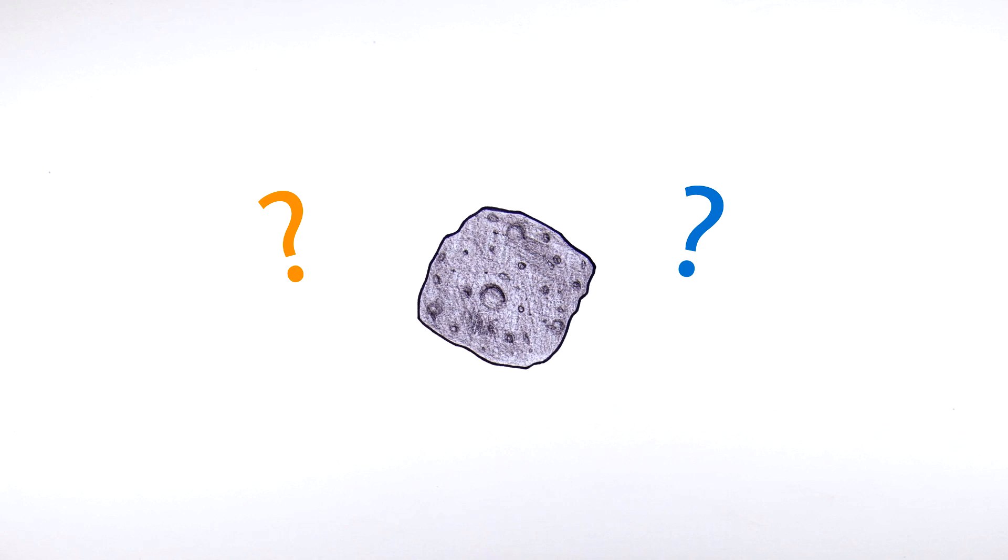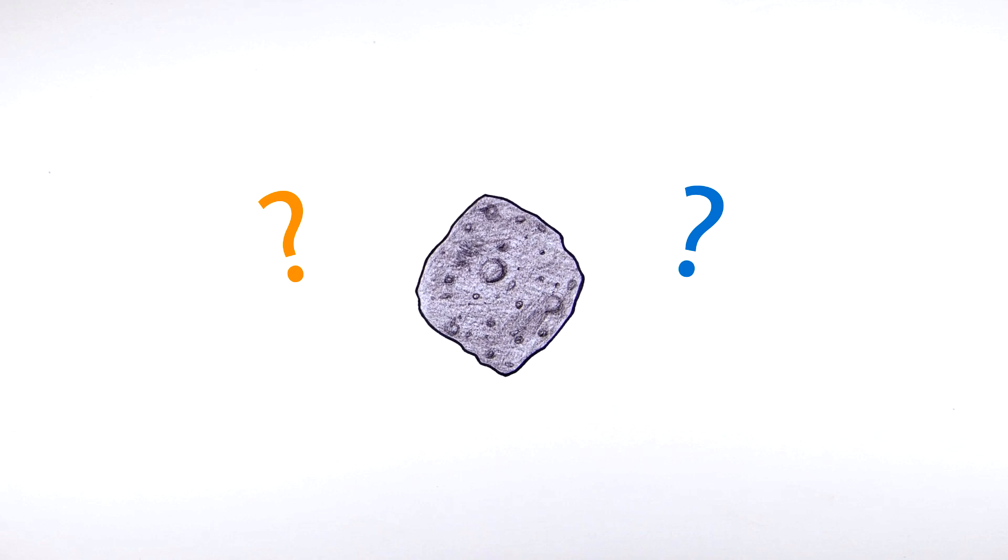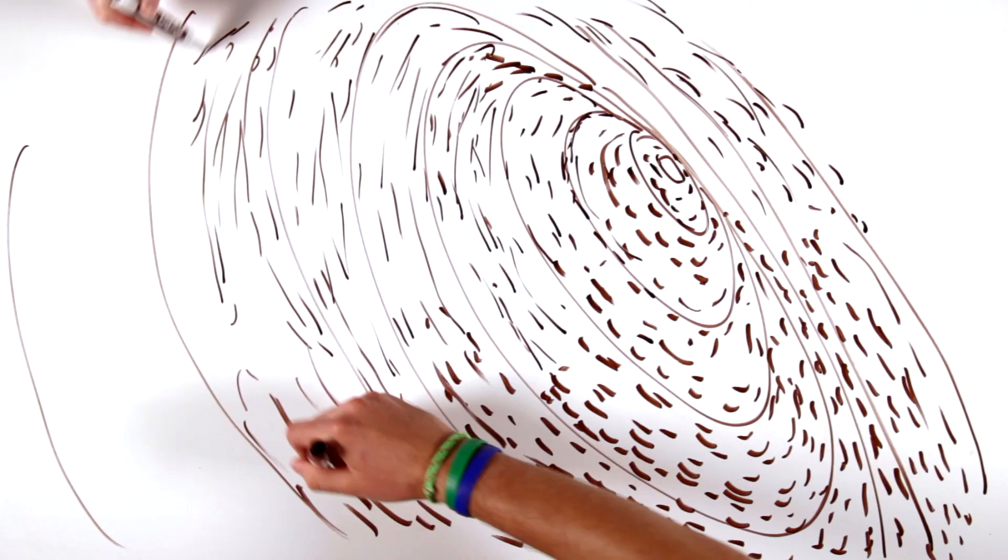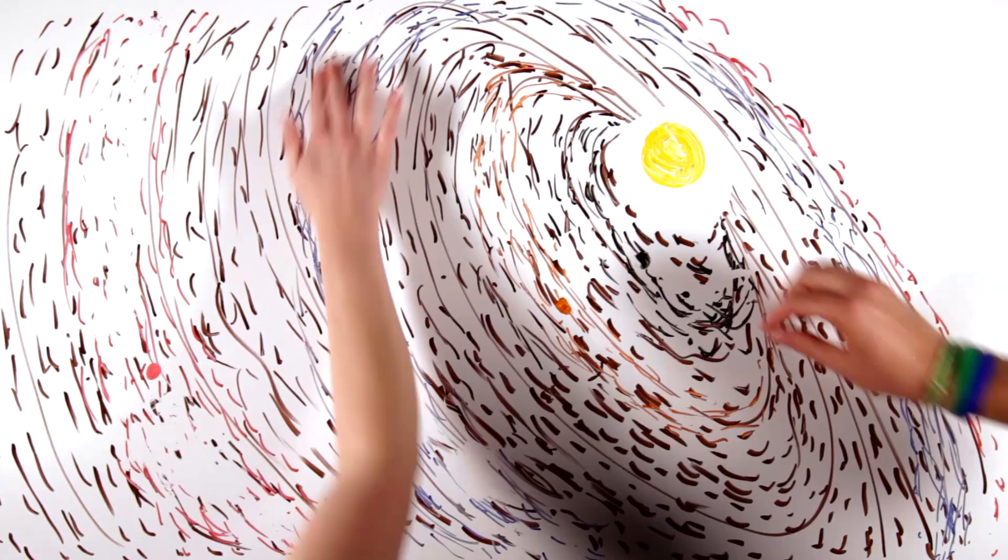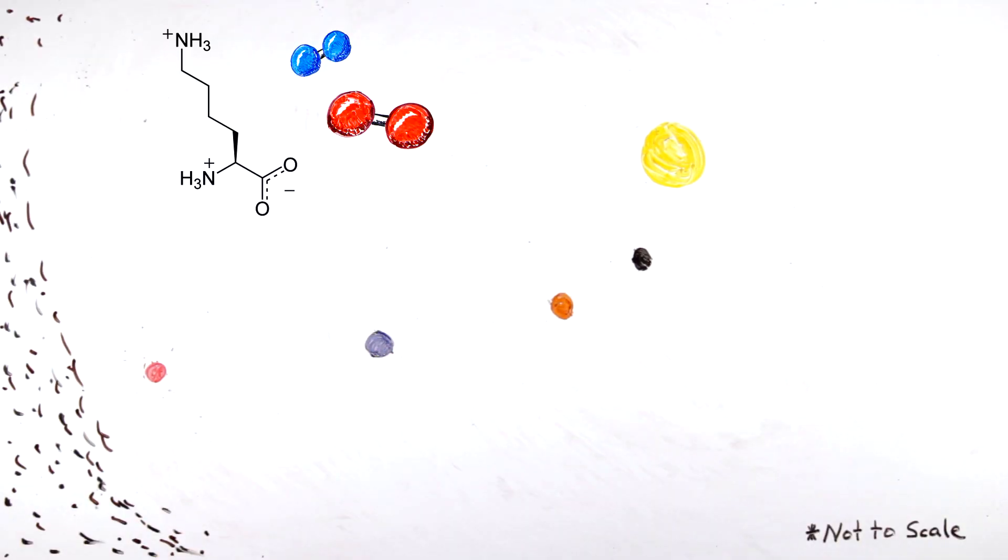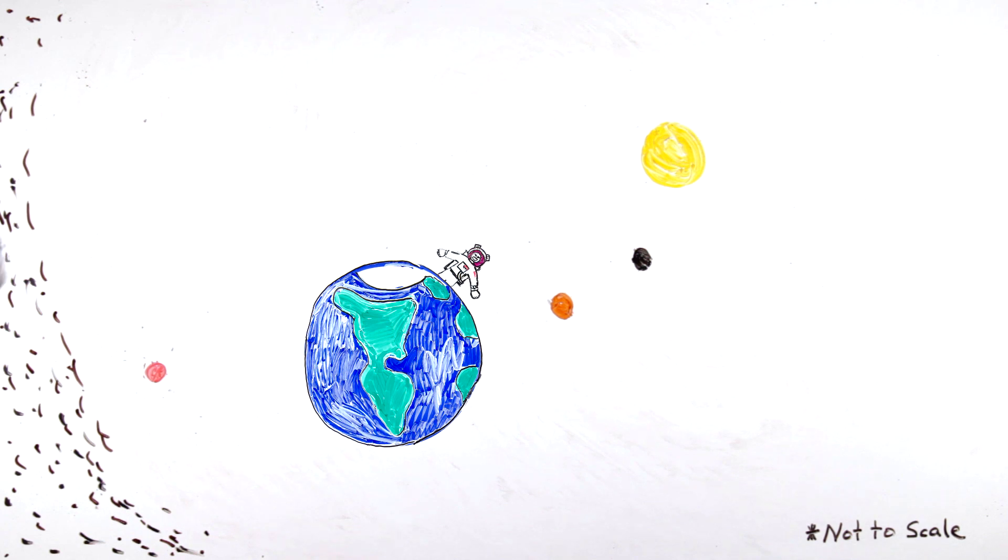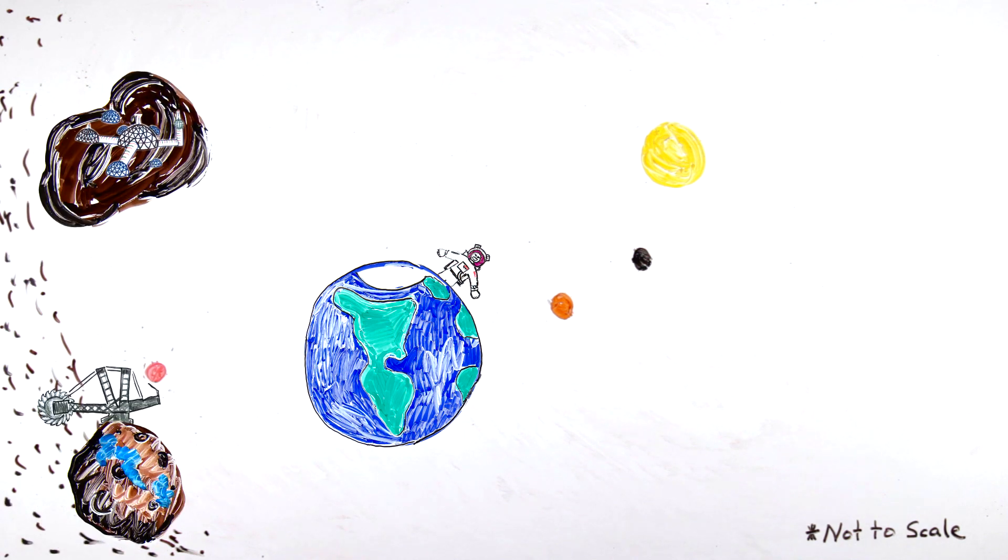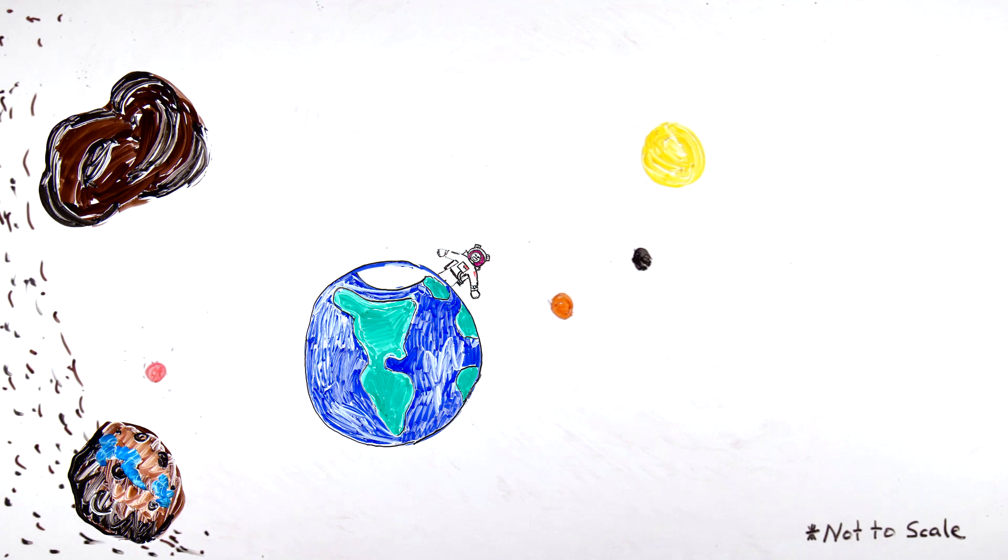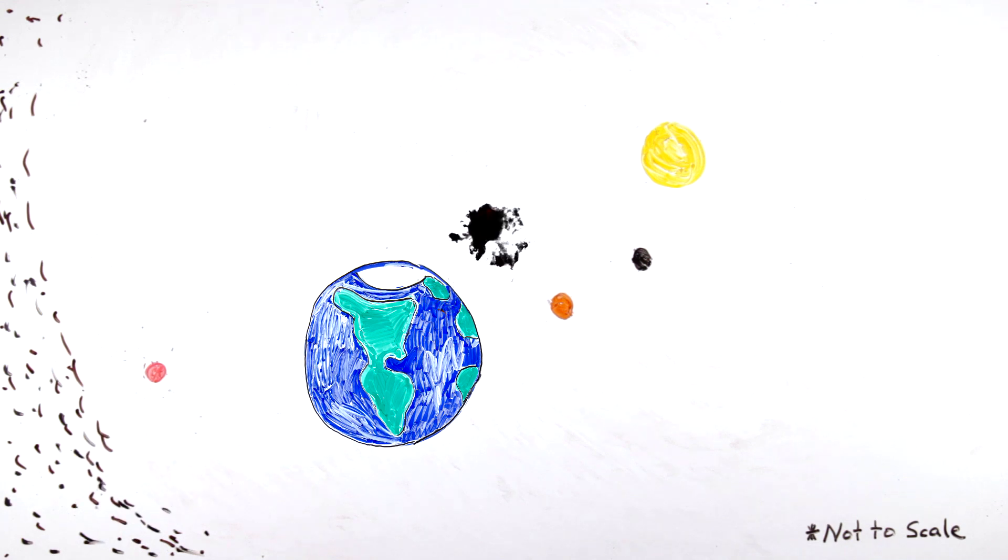Asteroids can address some big questions about our origins and destiny, like: how did the solar system form? What kinds of materials exist in the solar system? How did life evolve in the solar system? Can we mine asteroid resources? And are asteroids bringers of life or death, or both?